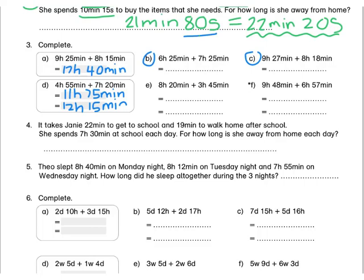Press pause to complete E and F by yourself now. Let's look at question 4. It takes Janie 22 minutes to get to school and 19 minutes to walk home after school. She spends 7 hours and 30 minutes at school every day. For how long is she away from home every day? We must add these 3 times up. We only have hours in this part, so we have 7 hours. Then we add 22 minutes and 19 minutes.